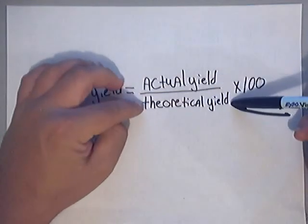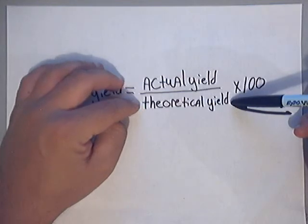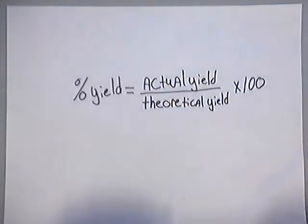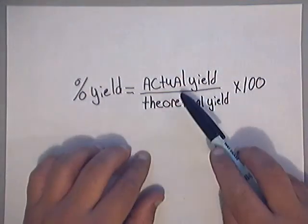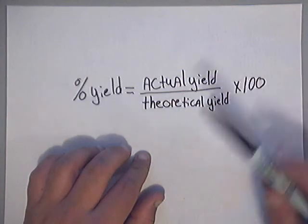Theoretical yield is what you get on paper. For example, when you're going from grams to grams, or grams to moles, or moles to grams, all those calculations are theoretical yields. Basically, any time that you perform a calculation by hand on paper, you're getting theoretical yields.